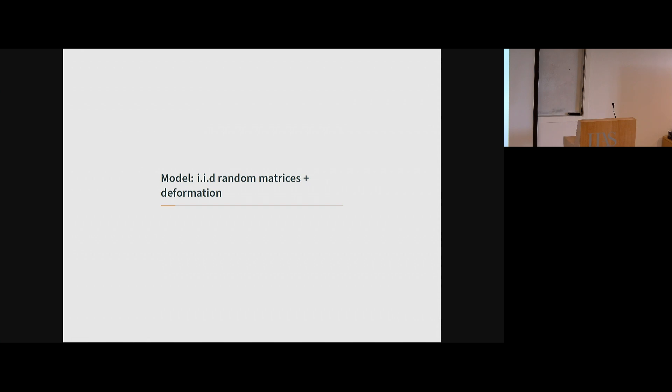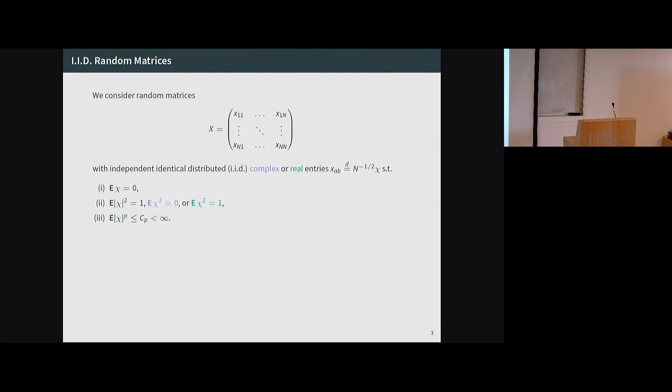Let me first introduce the basic object: what we call the IID random matrices. The IID random matrix is exactly what the name says — this is the non-Hermitian analog of the Wigner matrices. Interestingly, it doesn't have a special name. We have the Wigner matrix, Ginibre matrix, GUE, and so on. This kind of ensemble does not have a special name, so we just call them IID random matrices. It's an N by N random matrix where each matrix element is an independent random variable, identically distributed. It can be real or complex accordingly. Many theorems split into real and complex versions, but don't worry about that.